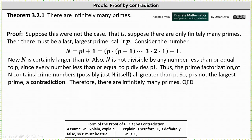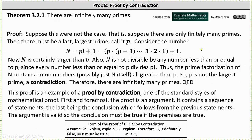Thus the prime factorization of n contains prime numbers all greater than p — possibly just n itself. So p is not the largest prime, which is a contradiction. Therefore there are infinitely many primes and the proof is complete. This proof is an example of proof by contradiction, one of the standard styles of mathematical proof.